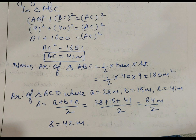Now we can find the area of triangle ABC easily using half into base into height. Base is 40 meter and height is 9 meter. So the area of triangle ABC is 180 meter square. For triangle ACD, A is 28 meter, B is 15 meter, and C is 41 meter. Using the semi-perimeter formula A plus B plus C upon 2, we get S as 42 meter.